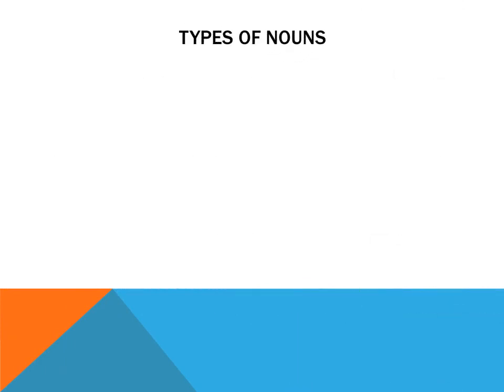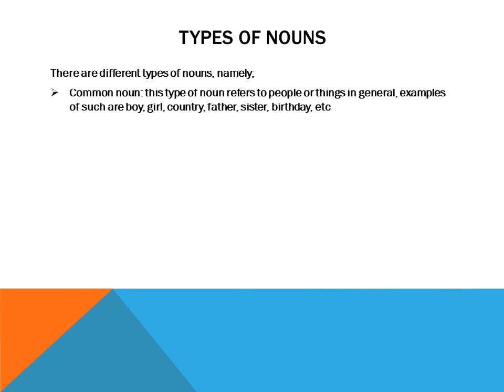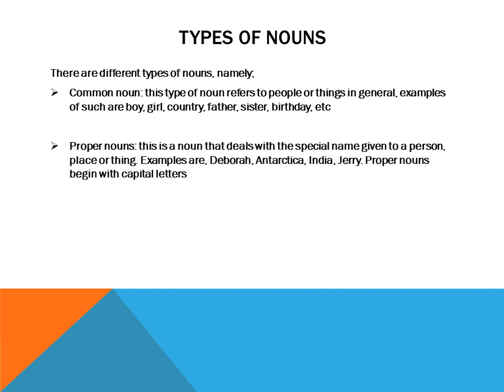Now, the types of nouns. There are different types of nouns. First, we have the common noun. This type of noun refers to people or things in general. Examples are: boy, girl, country, father, sister, birthday, and so on.